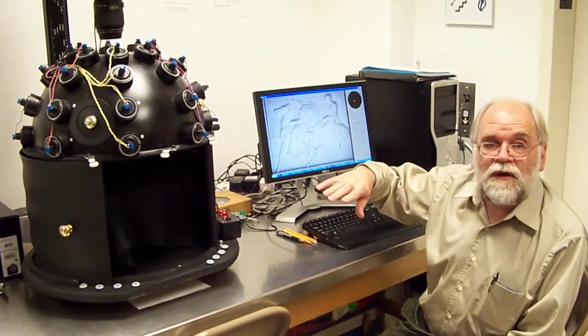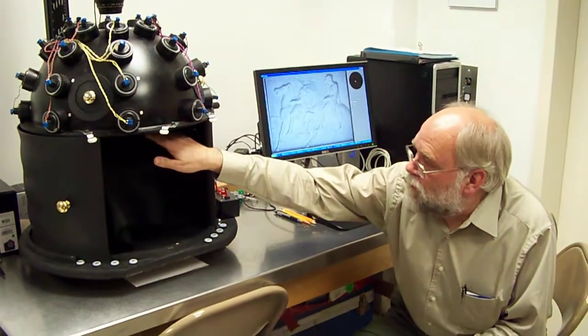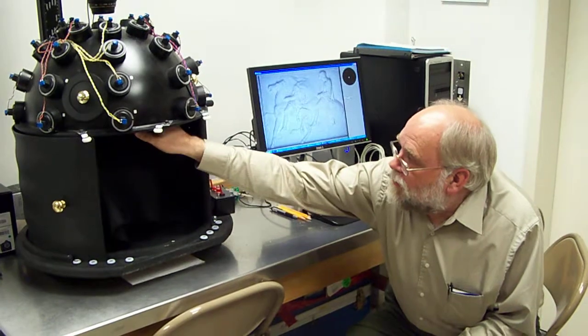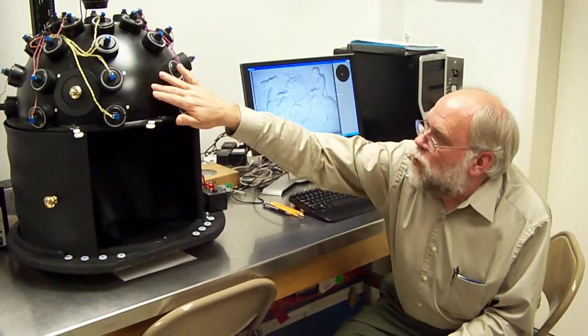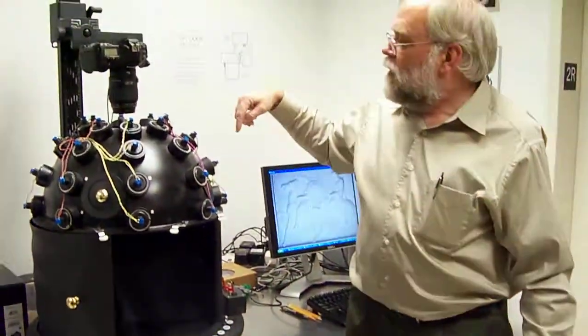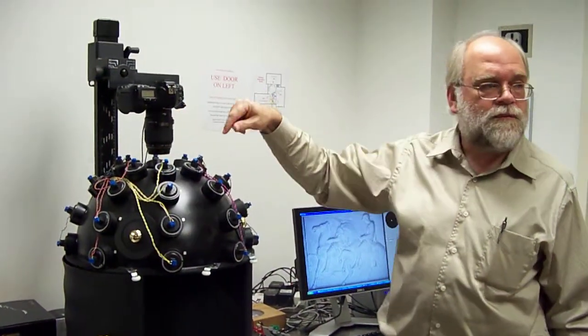So cylinder seals are good for, the impressions are good for this, not the seals themselves. Anyway, you put the object at the level of this dome here. The dome is fitted with 32 individual strobe lights.